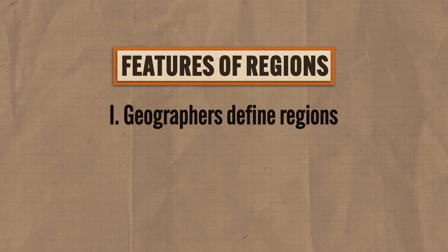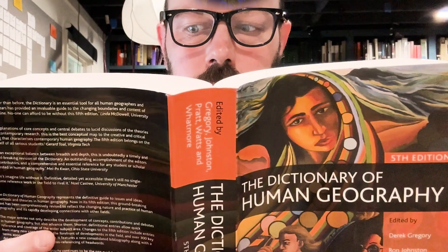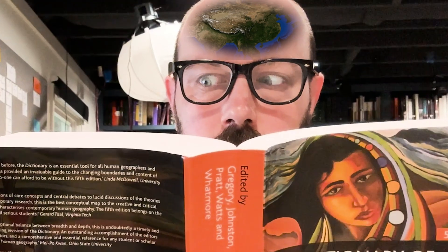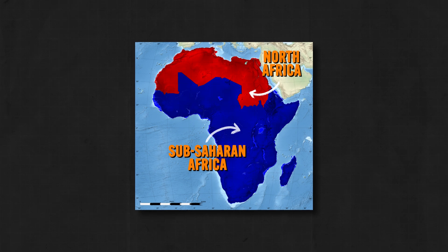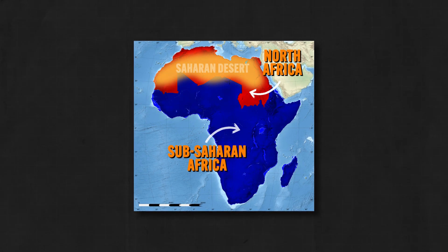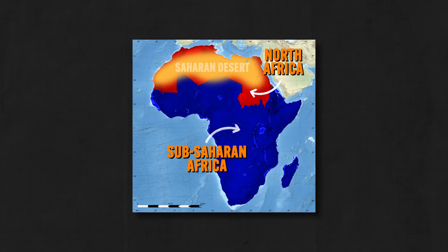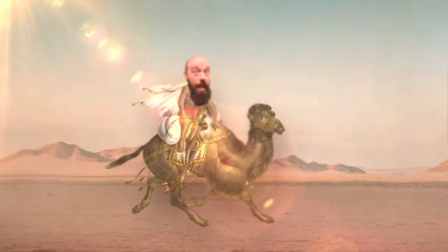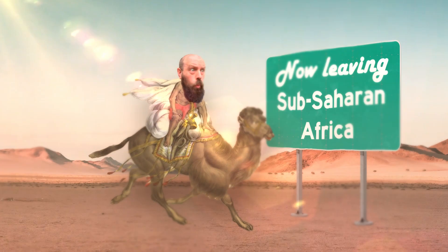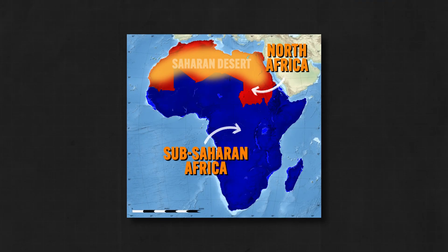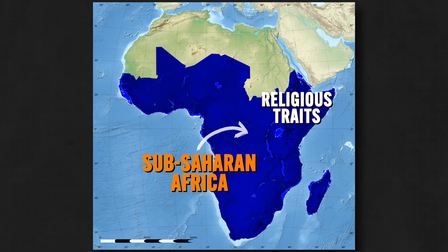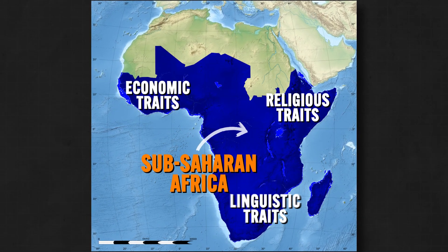There are two very important things to remember about regions. First, it is geographers who define regions. Regions only exist in the brains of geographers who are studying various phenomena. Like we often talk about Sub-Saharan Africa as a region which is distinct from North Africa. This giant desert is a physical feature that might help explain why these two regions exist, but it's not like you're going to find a sign that says 'now leaving Sub-Saharan Africa.'